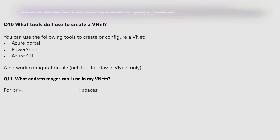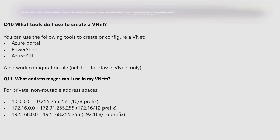What address range can I use in my VNets? For private, non-routable address space: 10.0.0.0 to 10.255.255.255 (slash 8), 172.16.0.0 (slash 12), and 192.168.0.0 (slash 16).